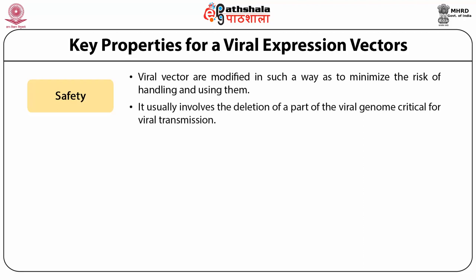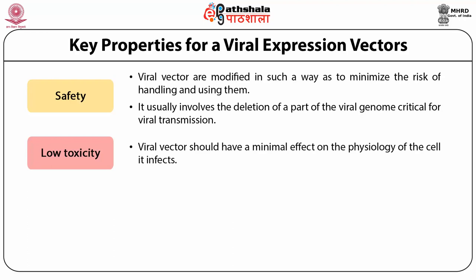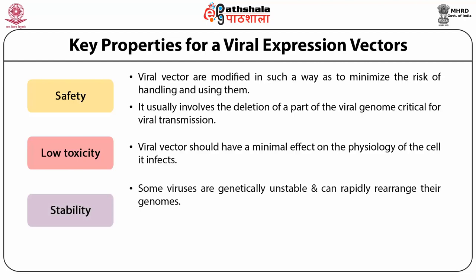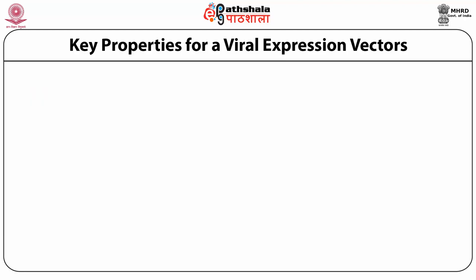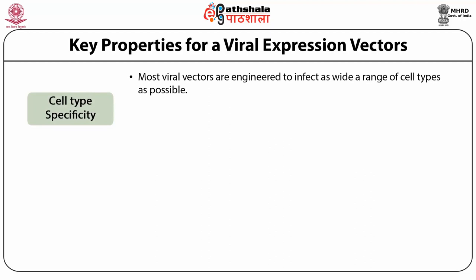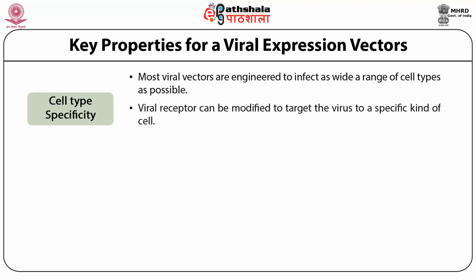Viral vectors should be of low toxicity, meaning they should have a minimal effect on the physiology of the cells they infect. Third, stability: some viruses are genetically unstable and can rapidly rearrange their genomes, which is detrimental to predictability and reproducibility and needs to be avoided. Another important factor is cell type specificity: most viral vectors are engineered to infect as wide a range of cell types as possible, but viral receptors can be modified to target the virus to a specific kind of cell. Viruses modified in this manner are said to be pseudotyped.